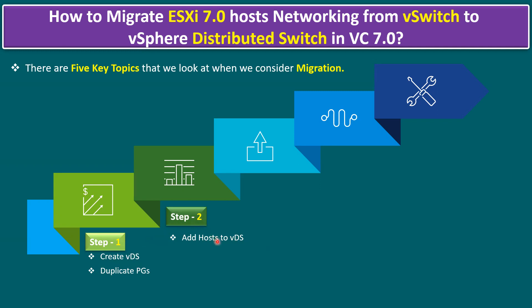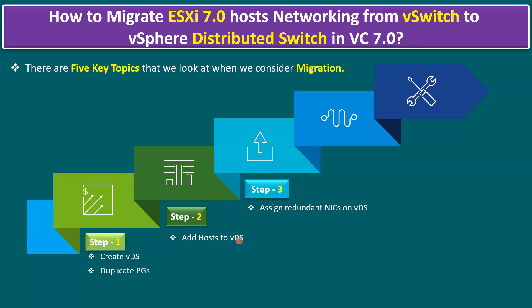Step two is to add the host to the virtual distributed switch. When we create a dvSwitch, by default it won't contain any ESXi hosts — we have to add them. Step three is to assign redundant NICs on the VDS. When adding to the dvSwitch, it may connect with one NIC by default. The minimum requirement is one NIC card per host; the recommendation is two NIC cards for redundancy.